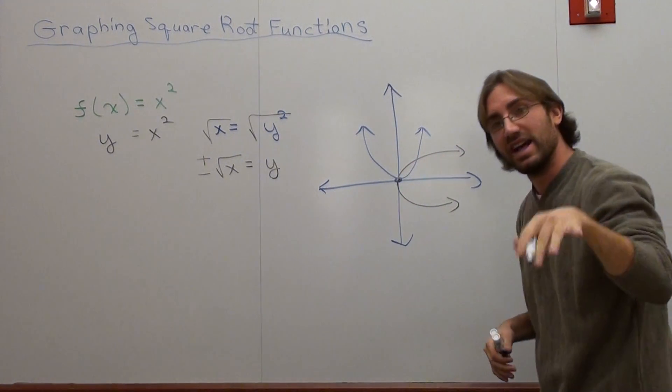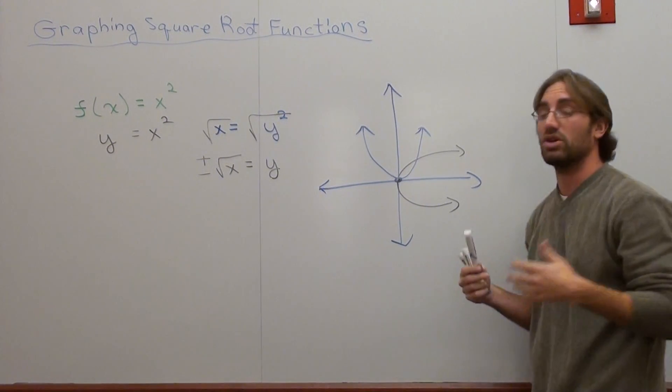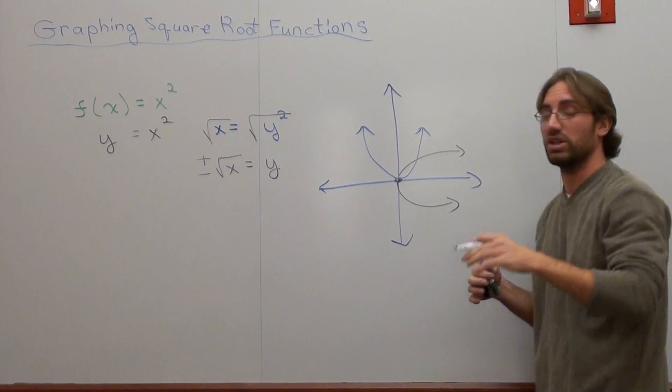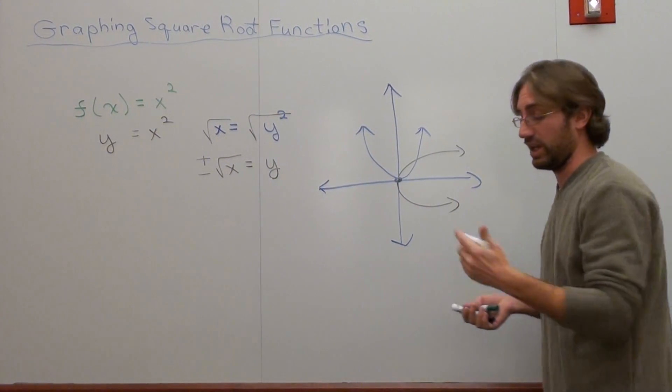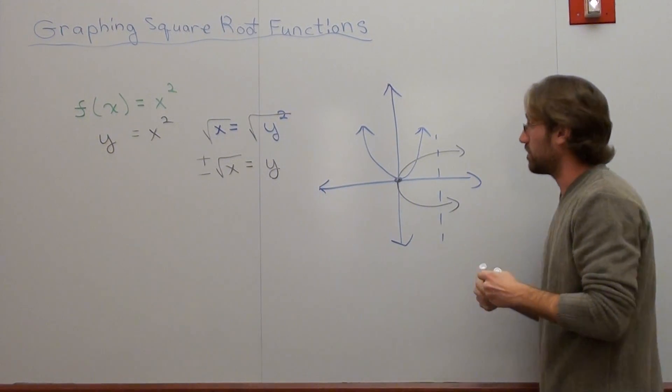Now the problem is that's not a function, and if you go back to any video lessons, or if you know what a function is, it has to pass something called the vertical line test. Basically, you can do that by looking at a graph or looking at tables, but if you draw a vertical line through a graph, it's only supposed to hit one point.